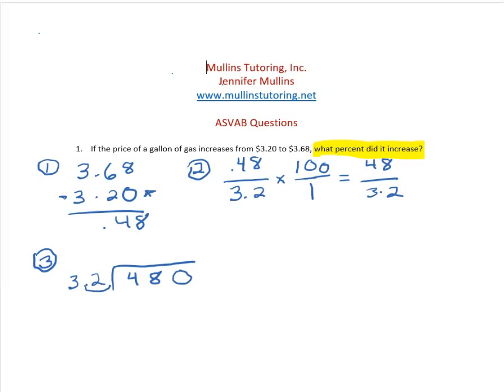I'm just going to look at 32 going into 48. So 32 goes into 48 one time. One times 32 is 32, and I find the difference, which would be 16. Now I'm going to bring down the zero.